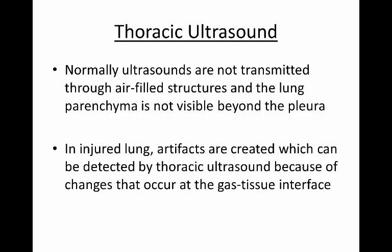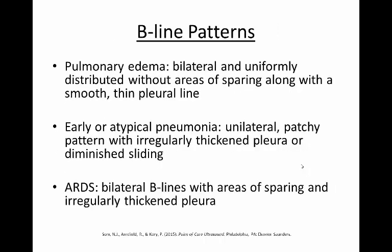When we use thoracic ultrasound, normally ultrasounds are not transmitted through air-filled structures and the lung parenchyma is not visible beyond the pleura. However, in injured lung, artifacts are created which can be detected by thoracic ultrasound because of changes that occur at the gas-tissue interface. Parenchymal lung diseases cause interlobular septa to widen as fluid accumulates, allowing ultrasound waves to be propagated, creating beelines. The beeline pattern can help to distinguish between different causes of parenchymal disease and respiratory failure.